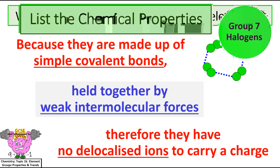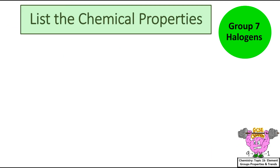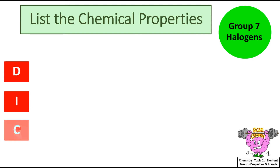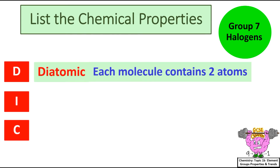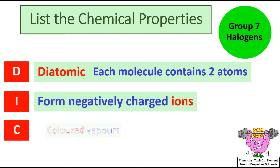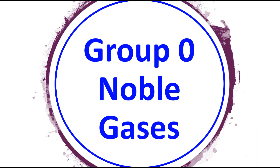List the chemical properties of Group 7 halogens. Use the acronym DIC to remember these: halogens are diatomic, which means each molecule contains two atoms; they form negatively charged ions; and they have coloured vapours.